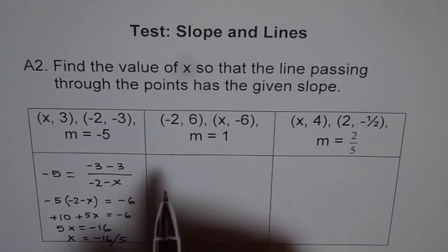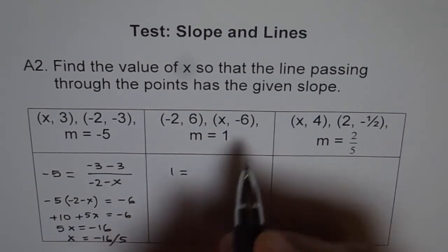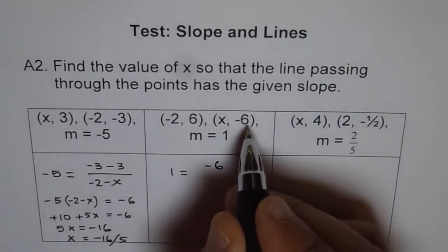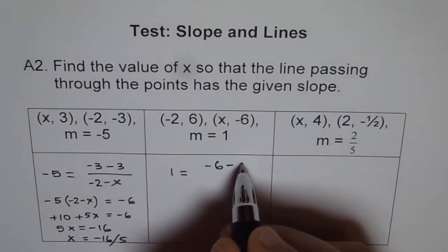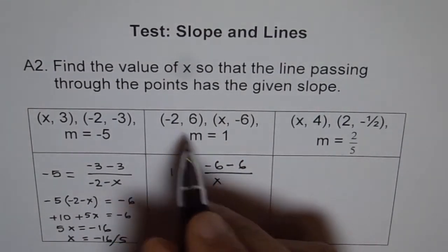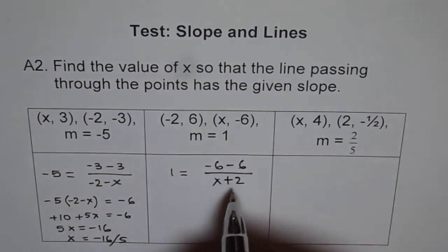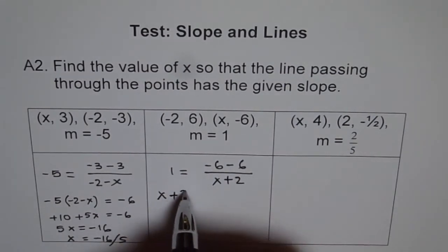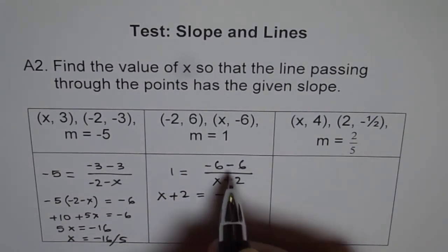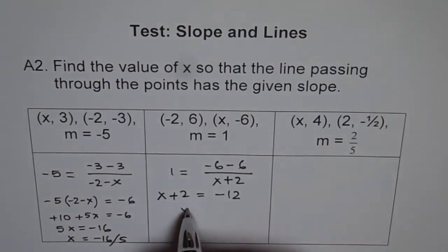Now the next question: slope is 1. So 1 equals minus 6 minus 6 divided by x minus minus 2, that means x plus 2. Cross multiply: x plus 2 equals minus 12, so x equals minus 12 minus 2, which gives us minus 14.